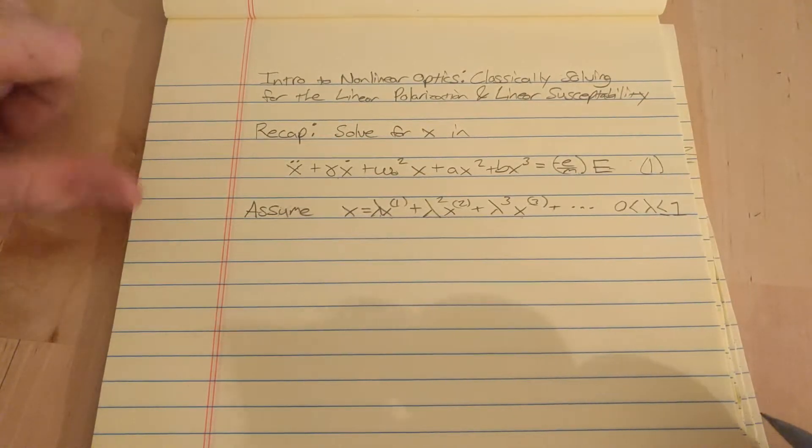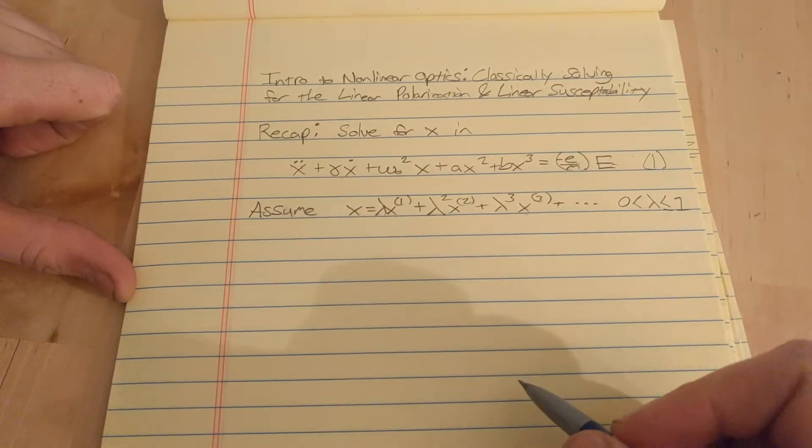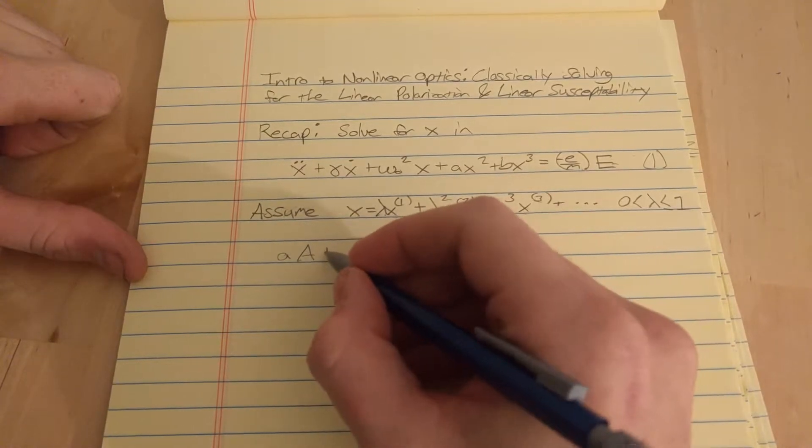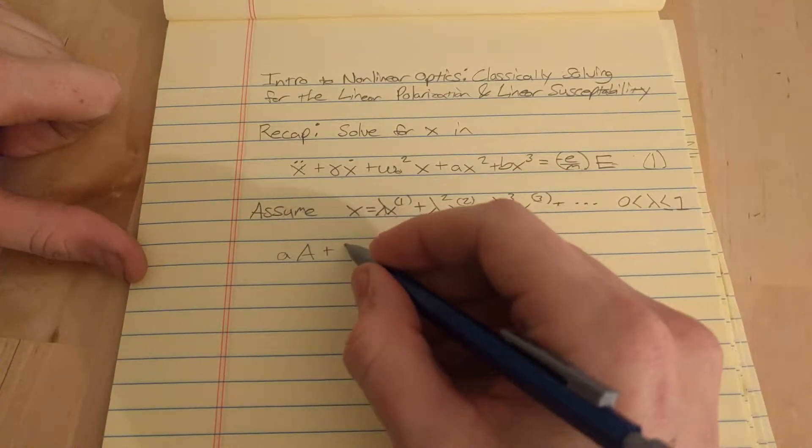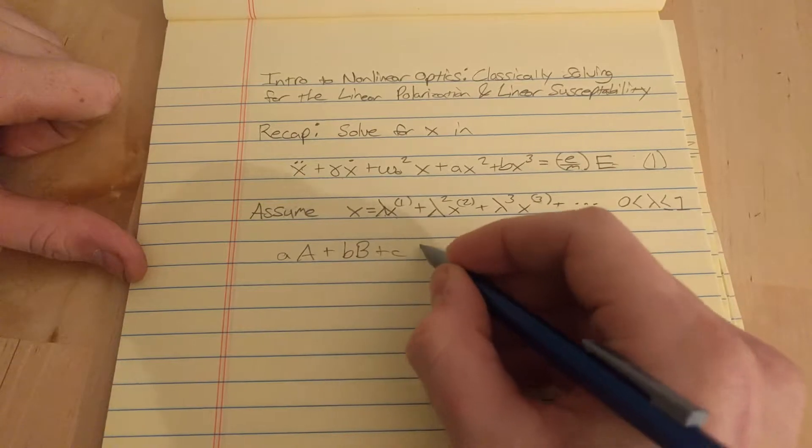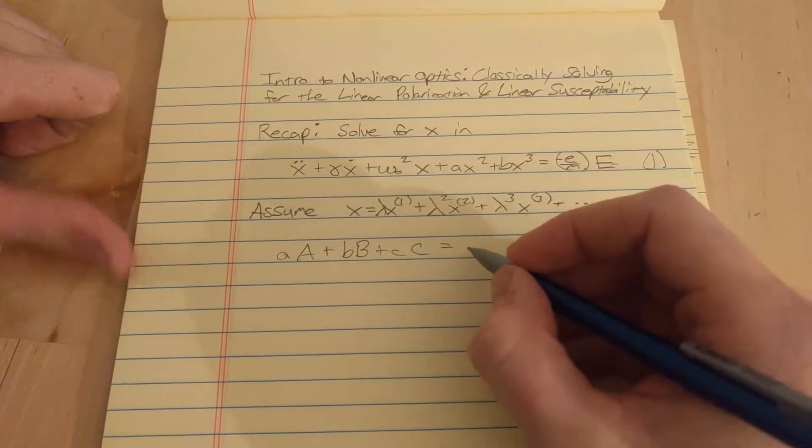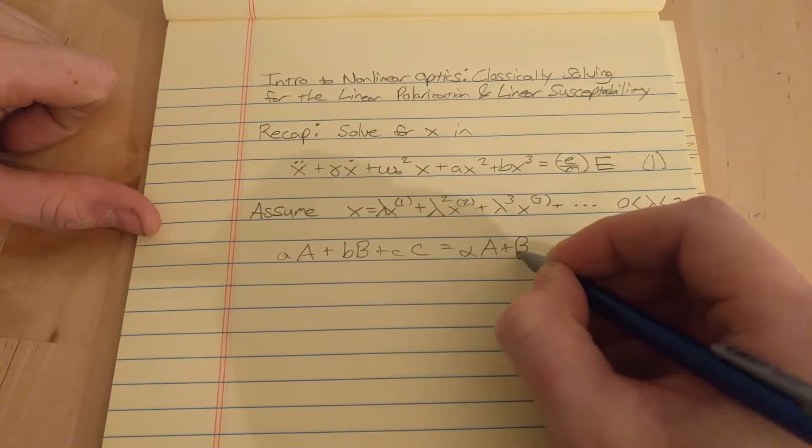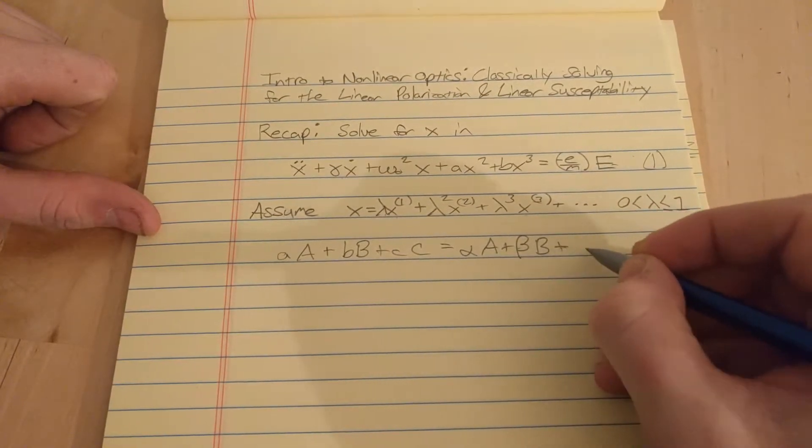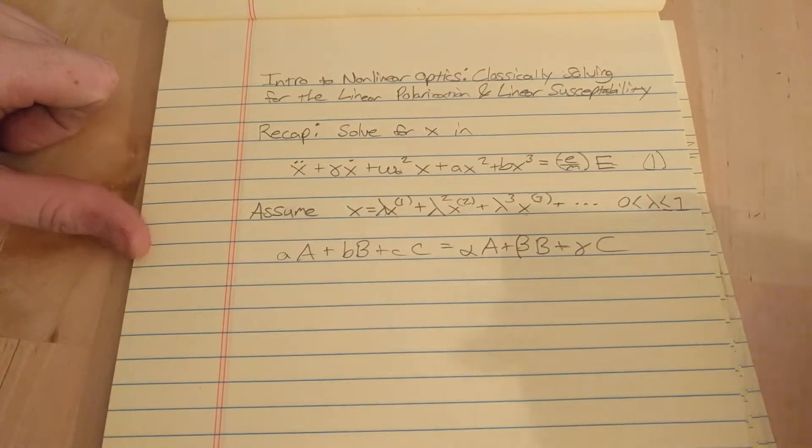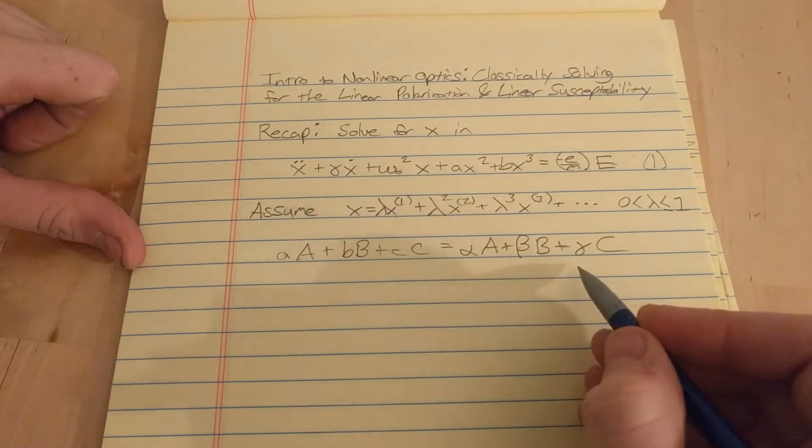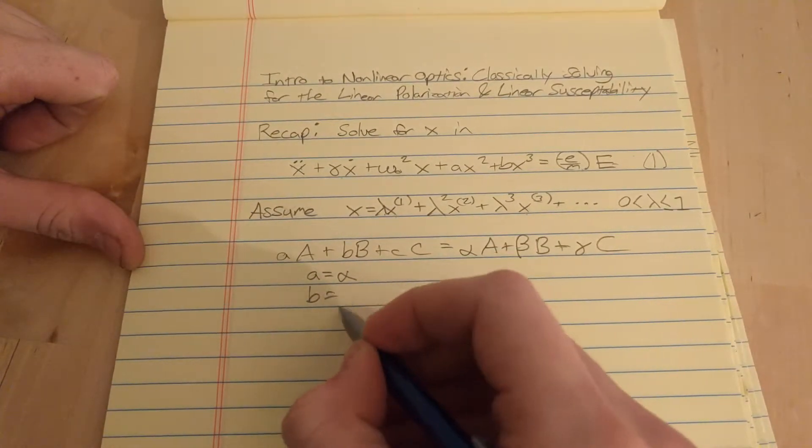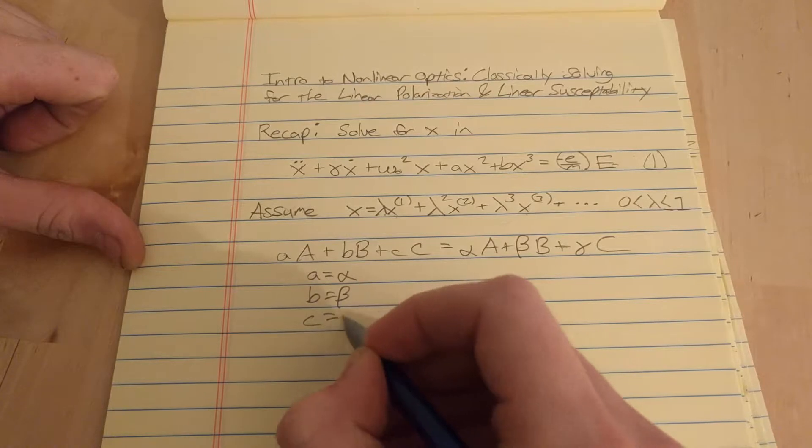So, in other words, what I'm saying is, if we have an equation like this, little a times big A, plus little b times big B, plus little c times big C, and if that's equal to alpha times big A, plus beta times big B, plus gamma times big C, well then, that implies that A is equal to alpha, B is equal to beta, and C is equal to gamma.